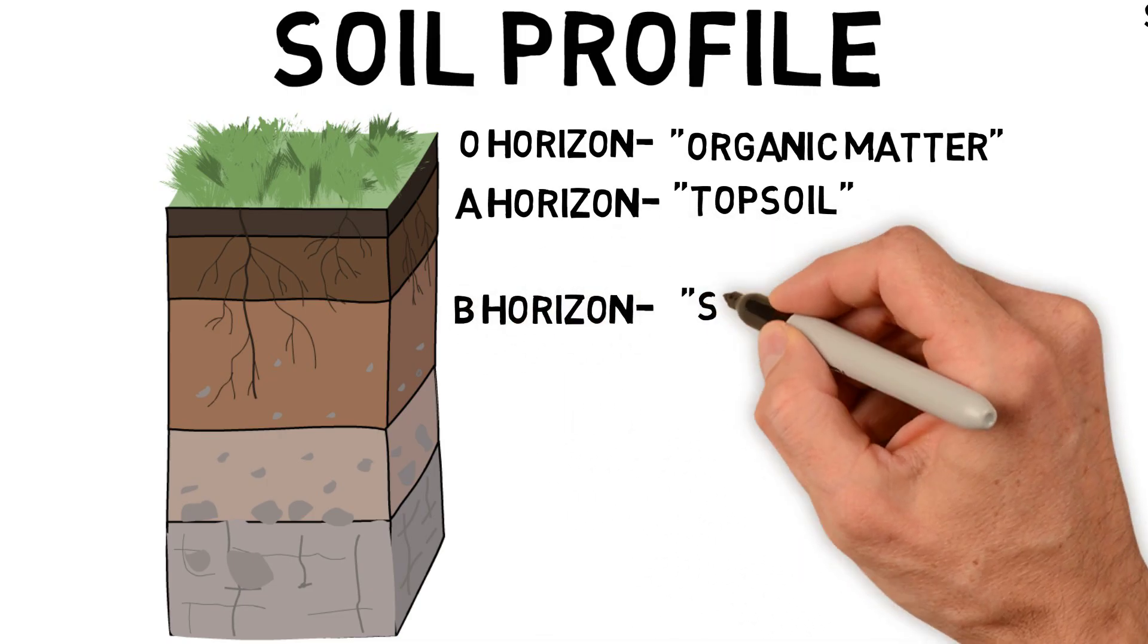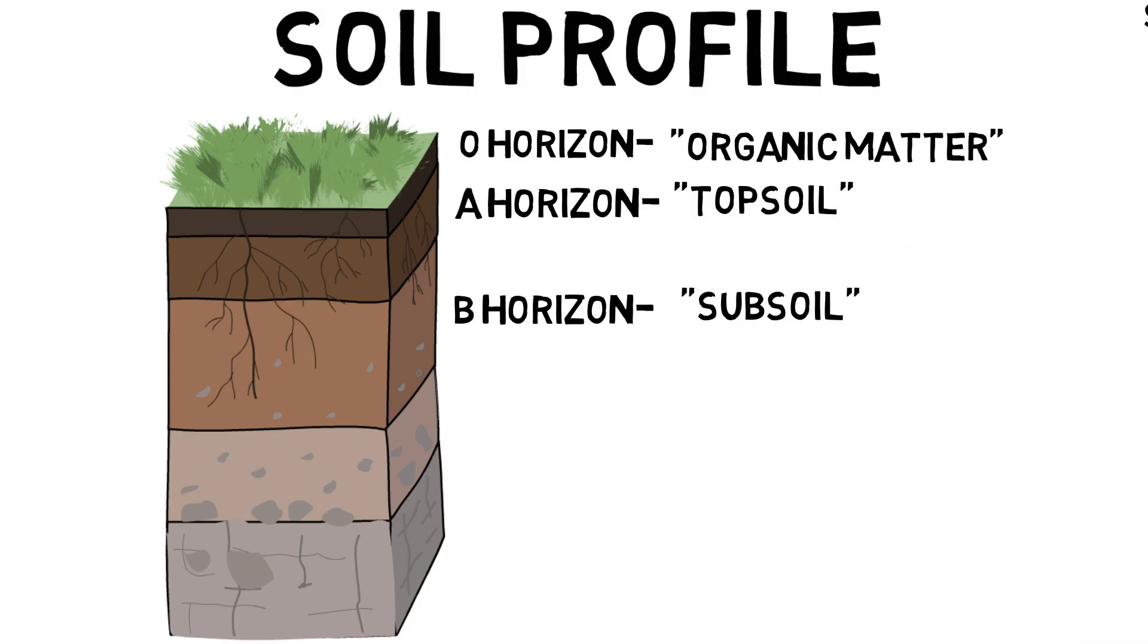The next layer below the A horizon is the B horizon, which a lot of people call subsoil, but in reality, it's called a zone of accumulation. This is where materials like clay collect in the soil profile from the movement of water downward.